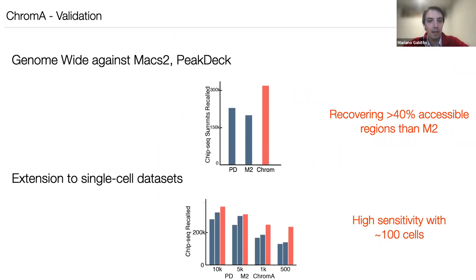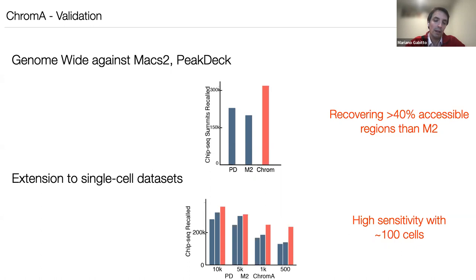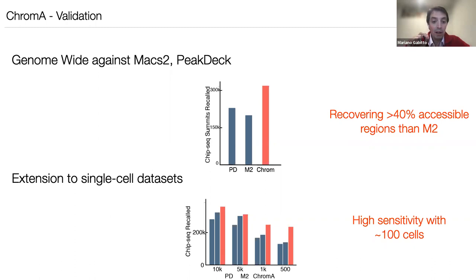For inference, we use Bayesian inference with variational methods, specifically a memoized flavor of variational inference. Because we have billions of parameters to infer across the genome, we create batches of data and remember sufficient statistics for each batch. Comparing Chroma against commonly used algorithms, we recover more than 40% more accessible regions against ground truth, and retain high sensitivity even with as few as 500 cells or very low signal-to-noise ratios.